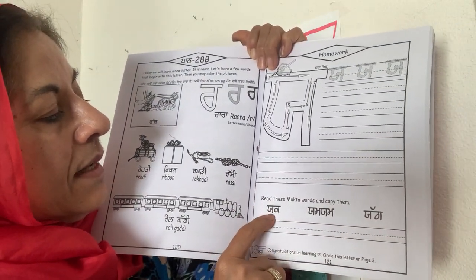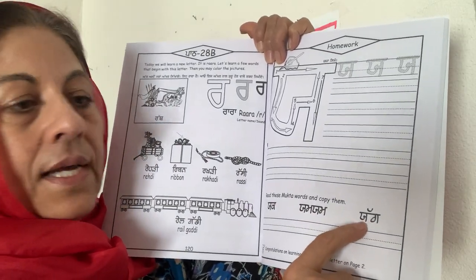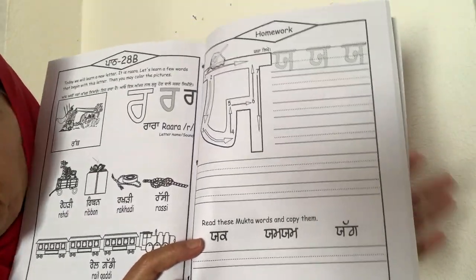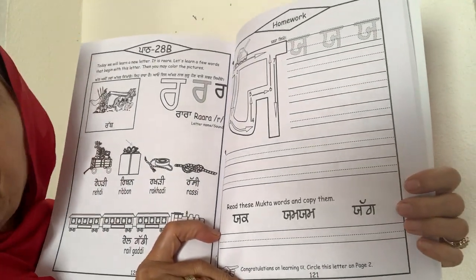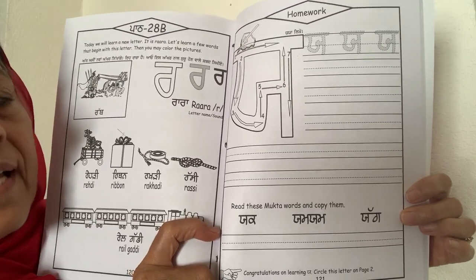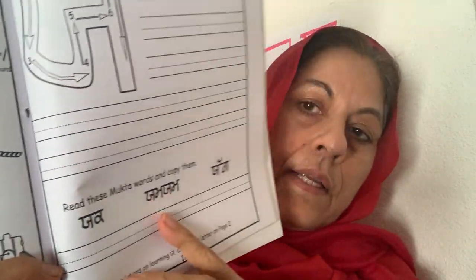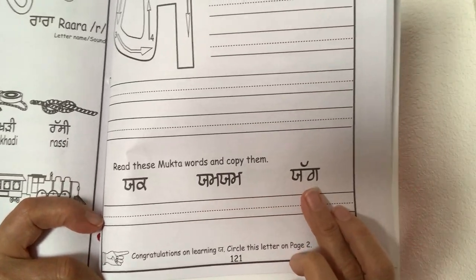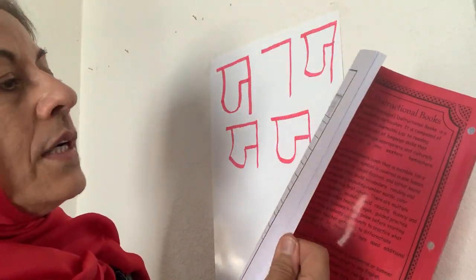These are some muktavers: Yak, Yum yum, Yag, Yak. Yag is kind of a prayer that Hindu people do — they burn a fire and say some chants to make some gods happy. Sikhs do not do Yag — that is what some Hindus do. So here are Yag, Yum yum, and Yak. These are some words. Yaya is a good letter to learn, but it's not the most common letter — you will not see it too many times.